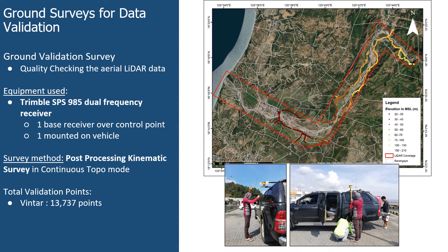Ground validation survey was done within the study area to determine the overall quality of the acquired data. This phase is very important to check whether the acquired LiDAR points have similar coordinates or less residuals with the actual ground points. In conducting the ground validation survey, at least two GPS receivers were used — one unit was set up at the established base control point and the other was mounted on a vehicle. The GPS receiver on the vehicle continuously records points while the vehicle traverses the study area. Validation points should be measured at fixed, semi-permanent, or stable locations less prone to lateral and vertical change over time, such as concrete roads and highways.